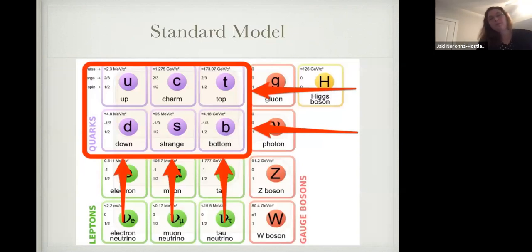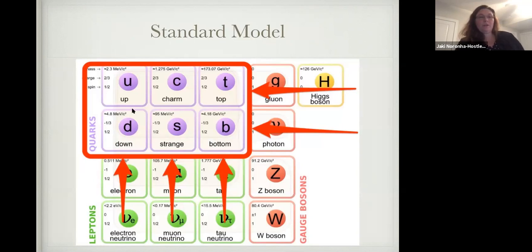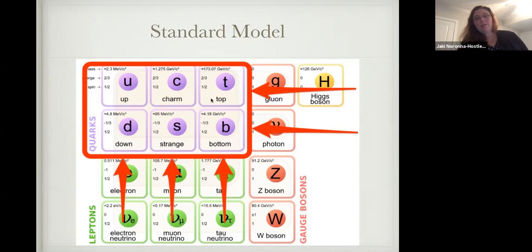How does this fit into the standard model? I'll mostly focus on the different quarks. Specifically, there are six quarks: the up and down quarks are the light quarks I'll refer to as light particles; there's the strange quark, which is slightly more massive; and then much heavier quarks — charm, bottom, and top, which is very short-lived. These heavier ones have interesting behavior interacting with the QGP. All these interactions are mediated through the gluon.